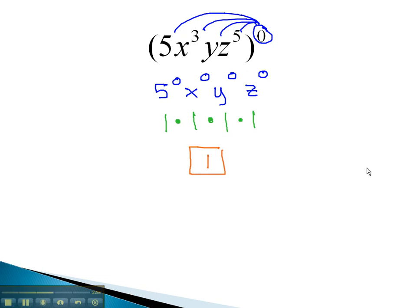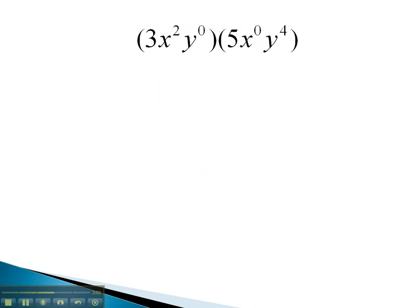Let's look at another expression that uses a variable to the 0 power. In this problem, the 0 exponents are only on the y and the x. Each of those will simplify simply to 1.